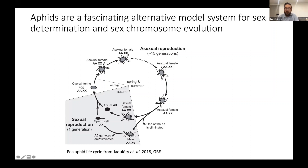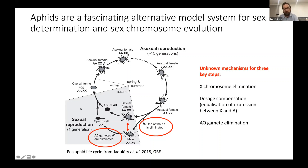Females have two copies of the X chromosome and males only have a single copy. During spermatogenesis, all sperm which don't carry a copy of the X chromosome are eliminated, which means that after mating, all they produce are overwintering eggs that hatch out into all female offspring again, restarting the cycle as asexual females. There are a bunch of interesting things we don't really understand about this process — we don't know how these X chromosomes are eliminated, how dosage compensation might work, or how the X-null gametes are identified.